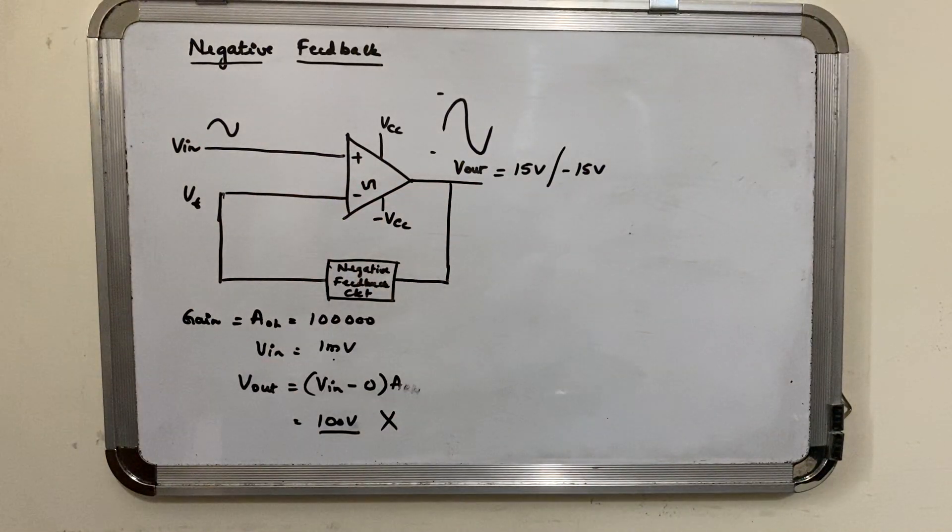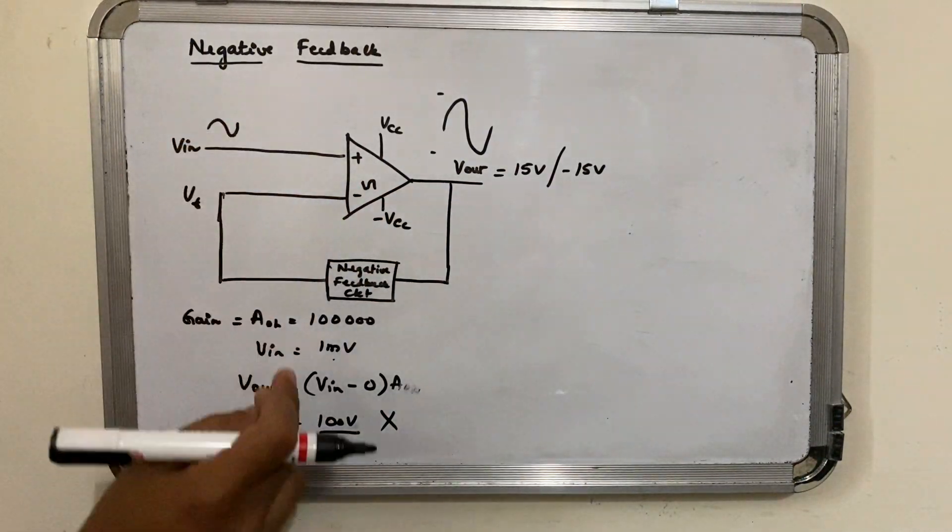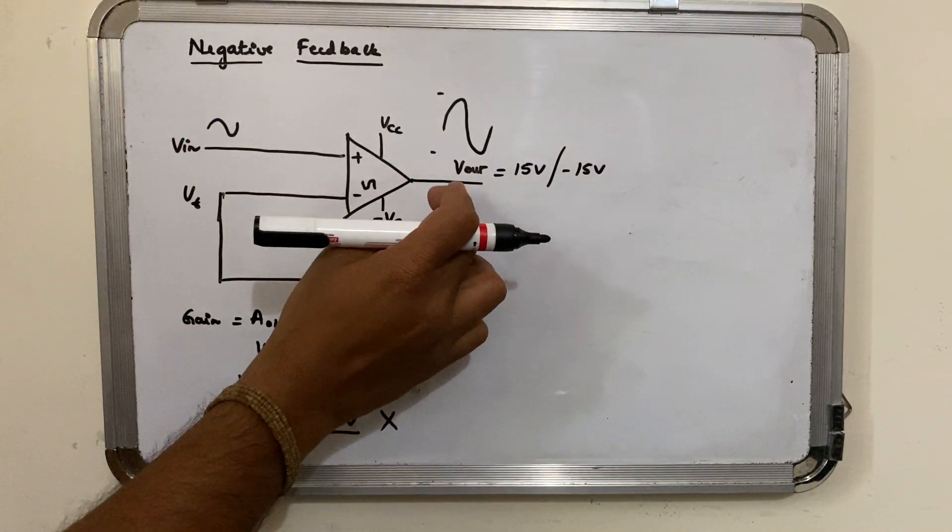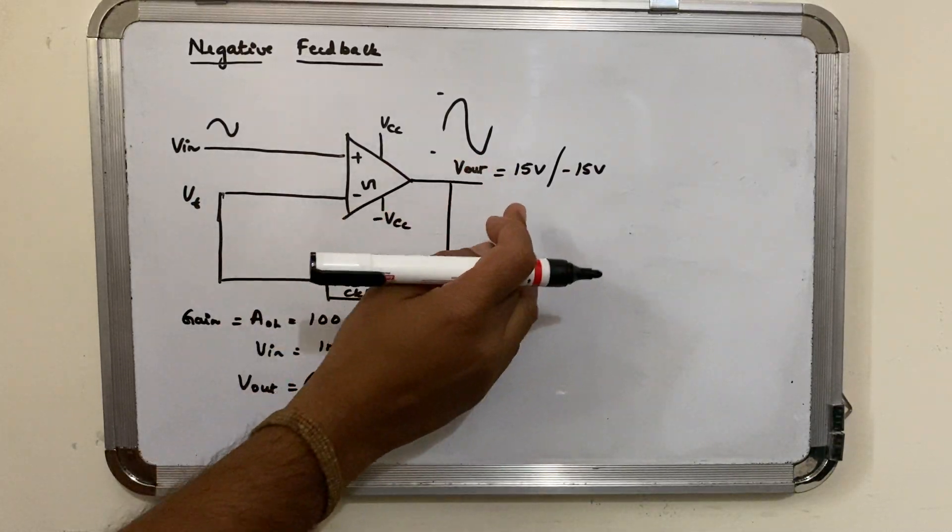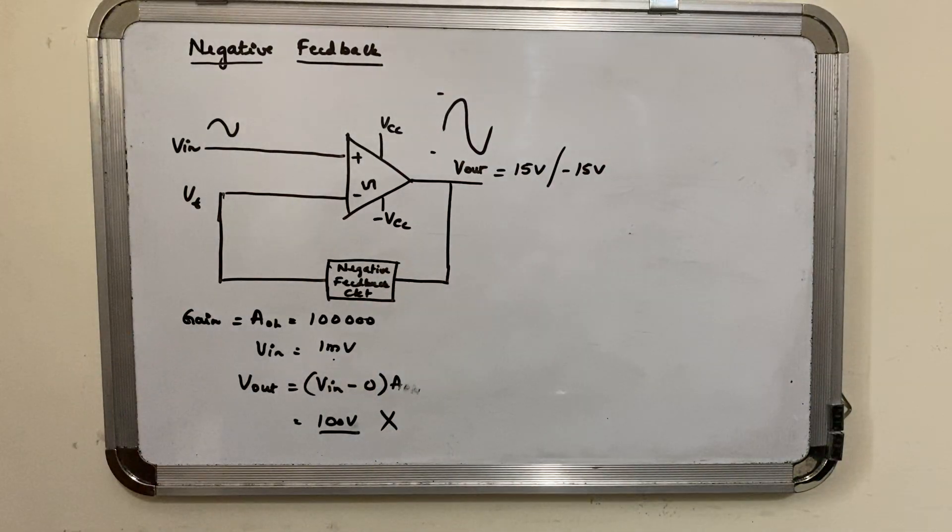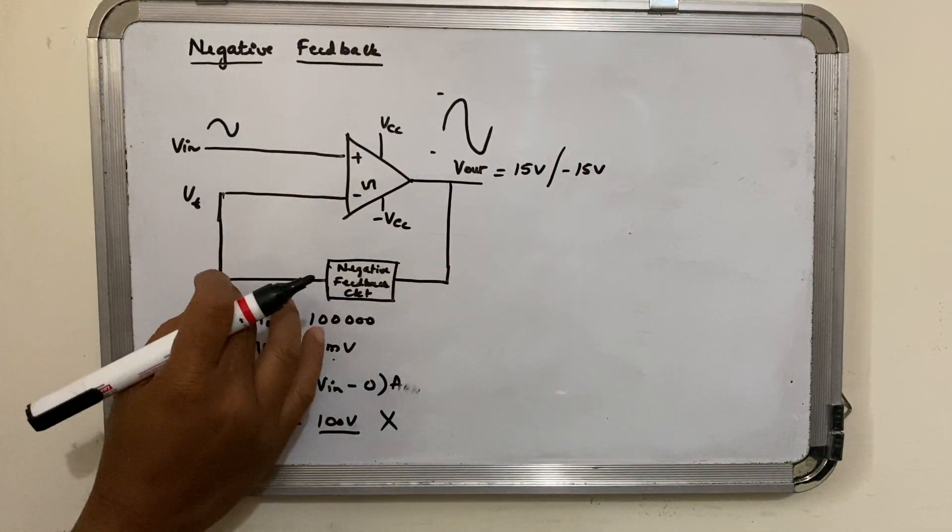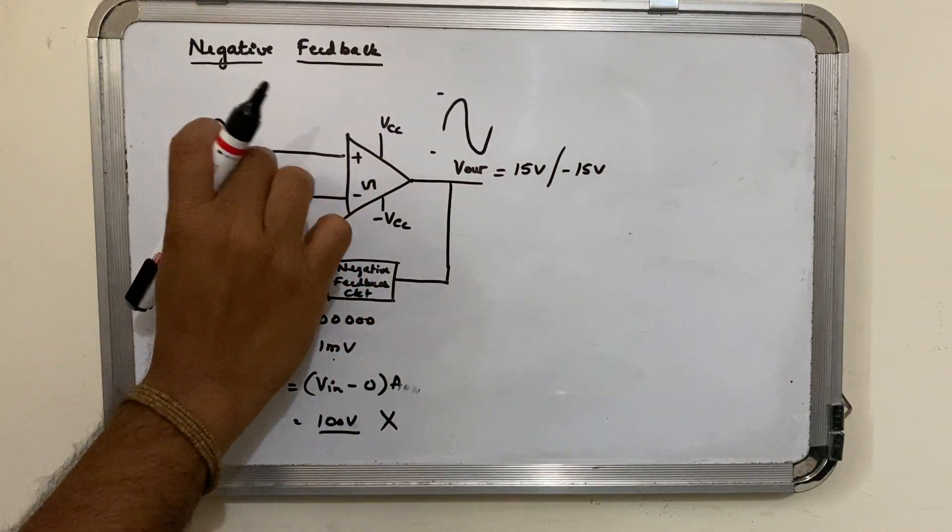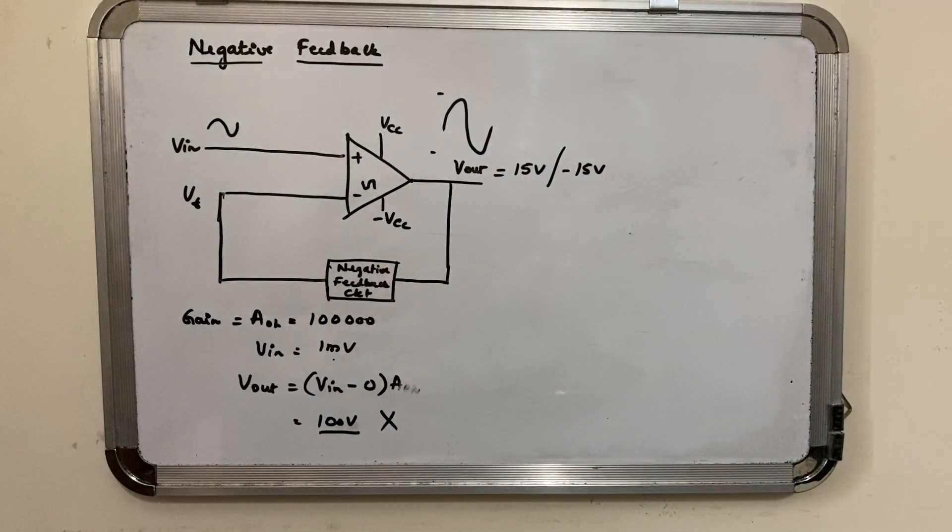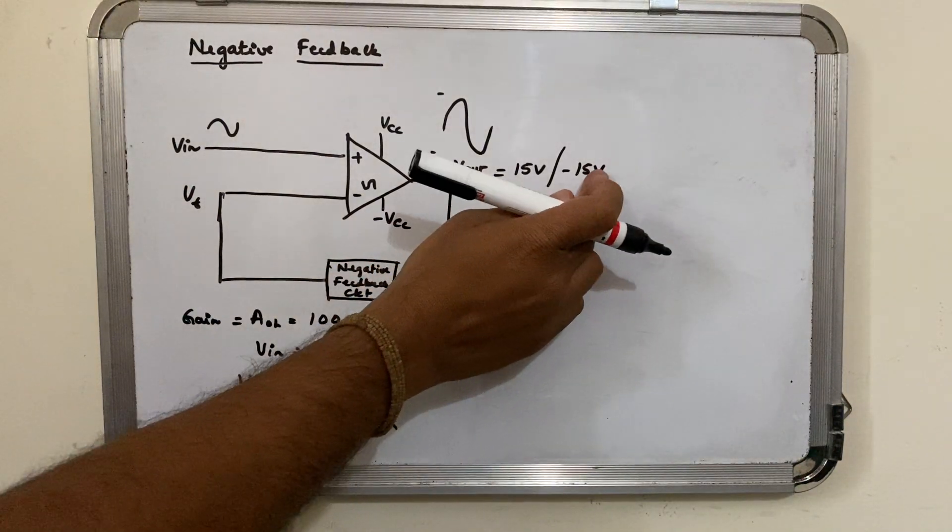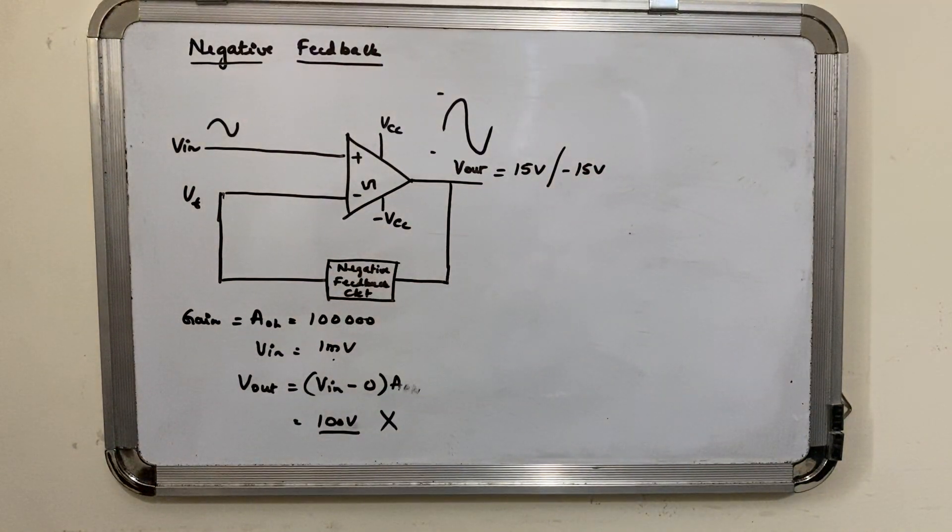So even if you give some small millivolt input here, the output is driven to saturation - positive saturation (V_CC) or negative saturation. In order to avoid this, a part of it is given back to the negative terminal so that the difference here would reduce and you get a stable output. Otherwise the op-amp will be driven to positive saturation or negative saturation. That is the fundamental of using negative feedback in op-amps.